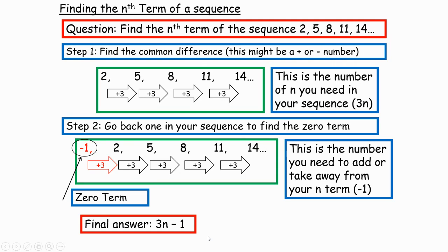Here's how this works: if I want to find out the hundredth term of the sequence, 3n minus 1 means in words 'three times a number take away one.' So for the hundredth term, I do three times 100 take away 1, and the hundredth term is 299. If I wanted the thousandth term, it would be three times 1000 take away 1, which is 2999. We can jump to any term we want with this formula.